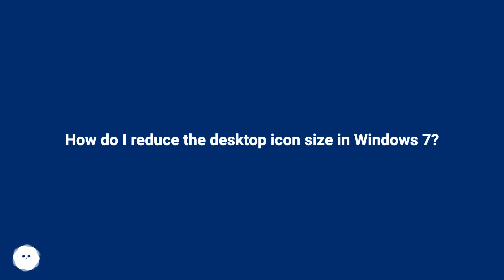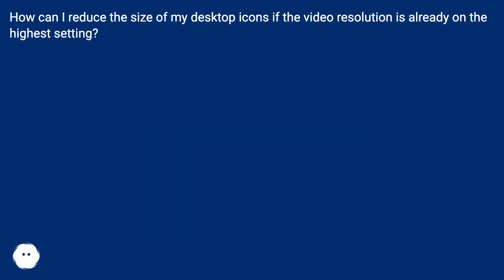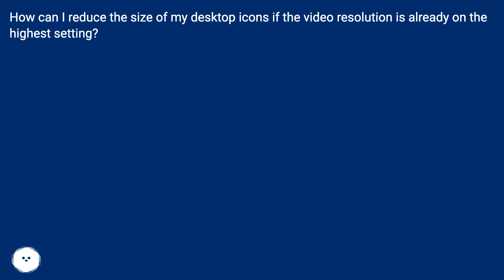How do I reduce the desktop icon size in Windows 7? How can I reduce the size of my desktop icons if the video resolution is already on the highest setting?